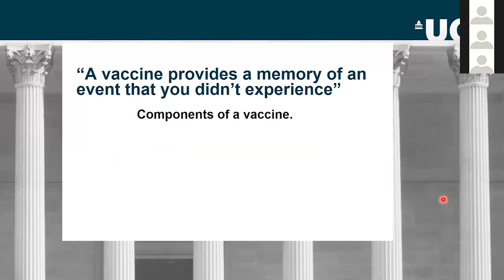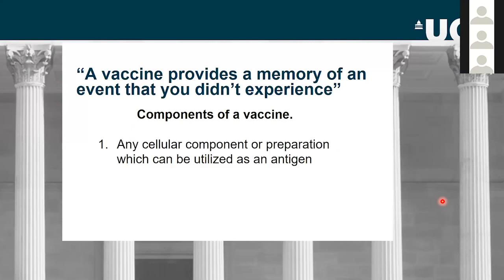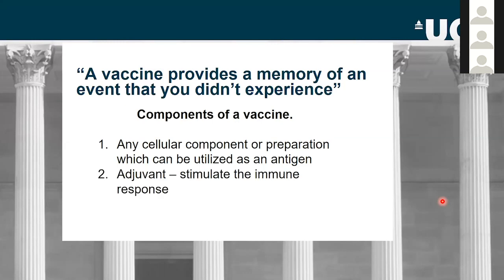A vaccine essentially functions to give your body a false memory — you're trying to trick your body into thinking it's encountered a disease before, so it knows how to cope with it next time. Vaccines have a number of components. The first and most important is the antigen itself: any cellular component or preparation from a pathogen with antigenic properties that will stimulate the immune system to give a protective response. This is not always sufficient by itself, so you may need a second component — an adjuvant.